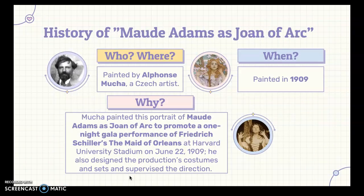This piece was painted by Alfonso Mucha. He's a Czech artist who painted it in 1909. He painted this portrait of Maud Adams as Joan of Arc to promote a one-night gala performance of Frederick Schiller's Maid of Orleans at Harvard University Stadium on June 22nd, 1909. He also designed the production's costumes and supervised the direction of it.